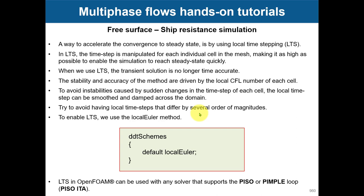Previously in fully unsteady simulations we used global time stepping: one single cell — the smallest or the one with the largest velocity — controls the CFL for the whole domain, and every cell sees the same time step. With local time stepping, every cell has a different time step.